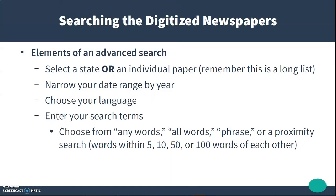You can also do an advanced search, which allows you to select your state or the individual newspaper. But remember, this is a very long list. You can narrow your date range by year, choose the language of the paper's publication, and then you have more options with your search terms. You can choose from any word, all words, a phrase, or you can do a proximity search, which finds your keywords within 5, 10, 50, or 100 words of each other.